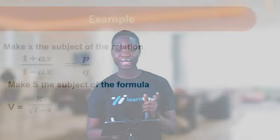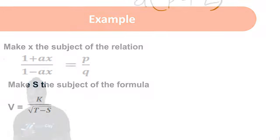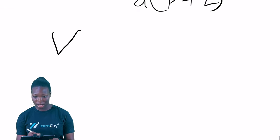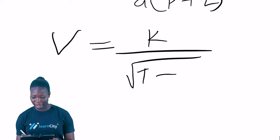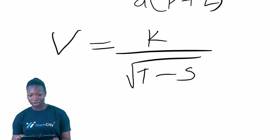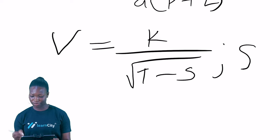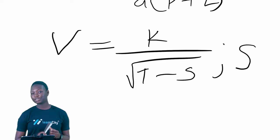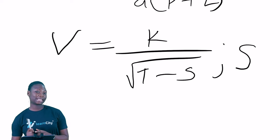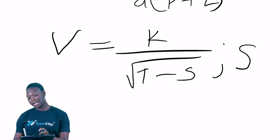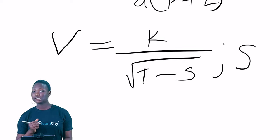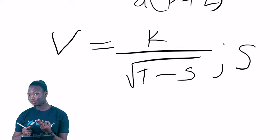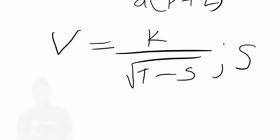Now for the next example: make s the subject of the formula in v = k / √(c - s). Not forgetting our rules — we begin by clearing fractions, roots, or brackets. We have a root sign here. The root is a square root, so we square both sides to eliminate it.